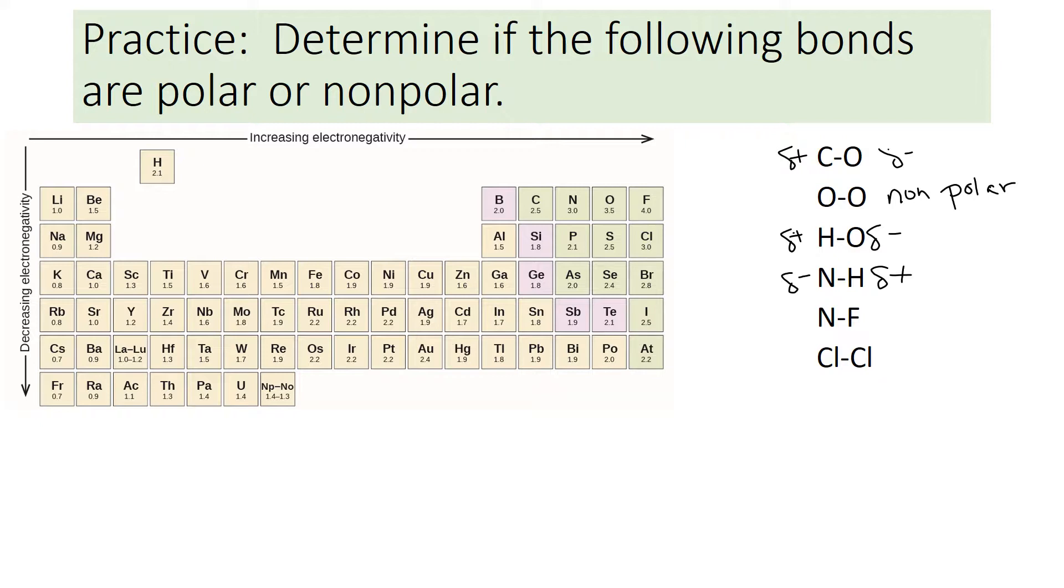Between nitrogen and fluorine, nitrogen is 3, fluorine is 4. So fluorine is the negative, as it always is. Nitrogen is positive. And chlorine to chlorine, they're the same element. So this one is nonpolar.